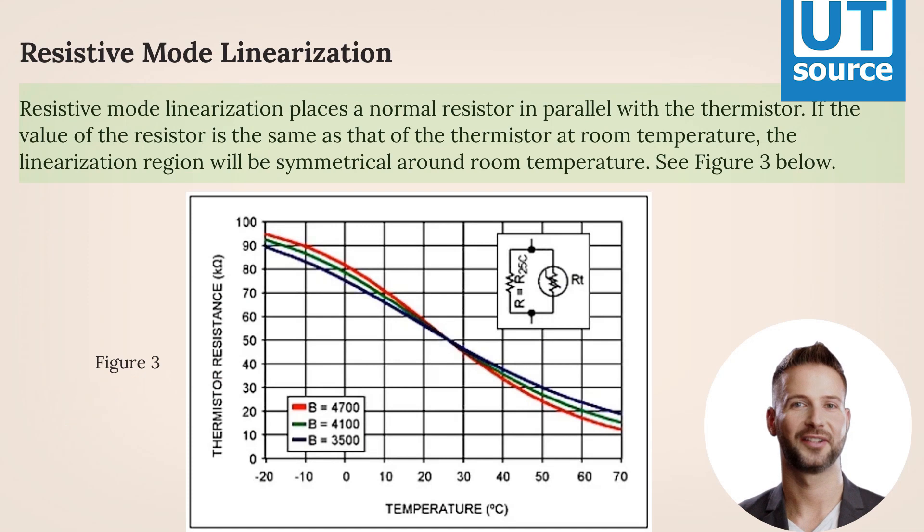However, there are two easy techniques used to linearize a thermistor's behavior, namely resistive mode and voltage mode.